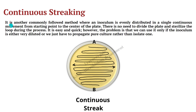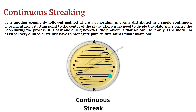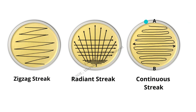Continuous streaking is the most commonly used technique in the laboratory where you have a pure culture and you just start from point A to point B, continuously streak as you see in this picture, and end at point B and incubate the petri plate. After the incubation you can see the growth in a continuous form. Along with this you have zigzag streaking, radiant streaking, and continuous streaking which we just discussed.